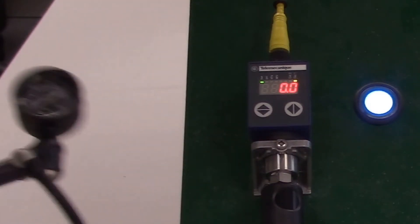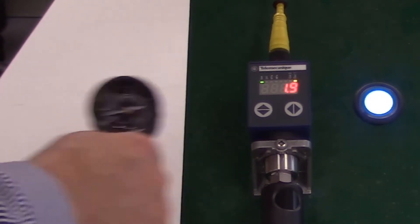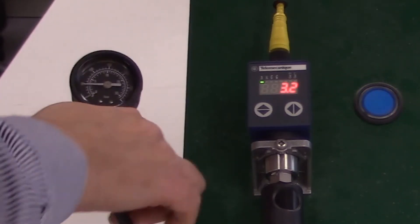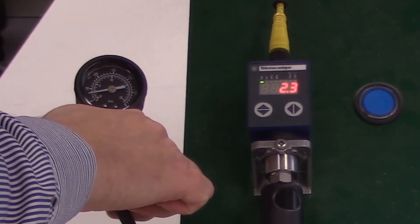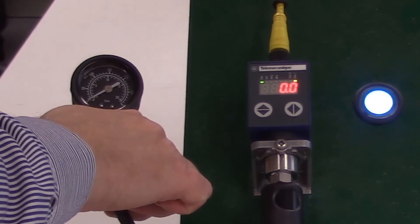In our XLMR pressure switch, set point 1 is set to 3.5 bar and the reset pressure to 1.5 bar. So when we pressurise up above 3.5 bar the light turns off, and as we decrease the pressure the light will turn back on at 1.5 bar as shown. Thanks for watching.